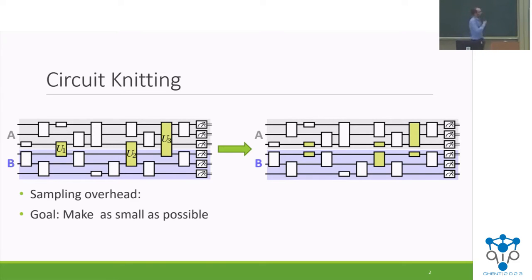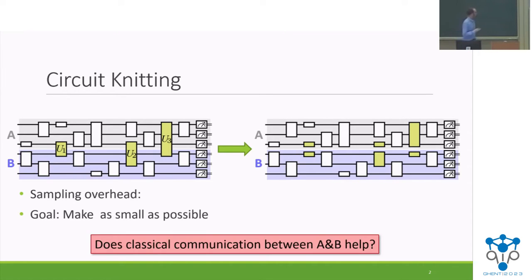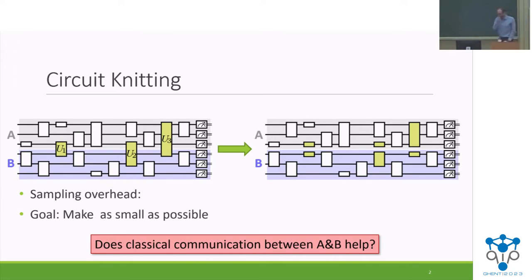We cannot get rid of this exponential overhead. But what we can try to do is make the basis of the exponential overhead as small as possible. The question we ask ourselves is: if you allow for some sort of classical communication between our subsystems A and B, does this in any way allow us to reduce the basis of the exponential overhead?